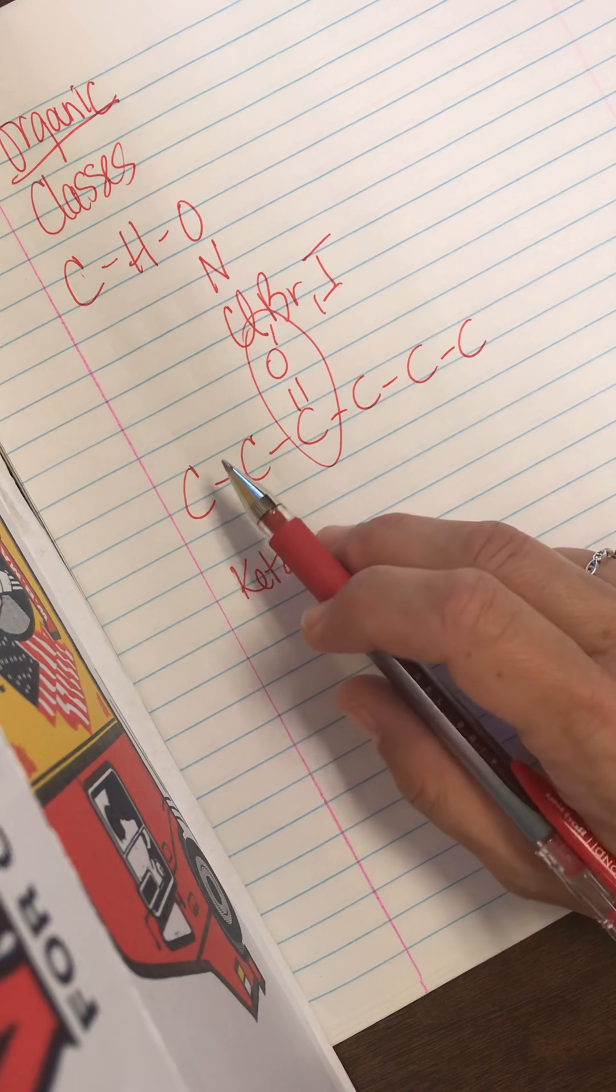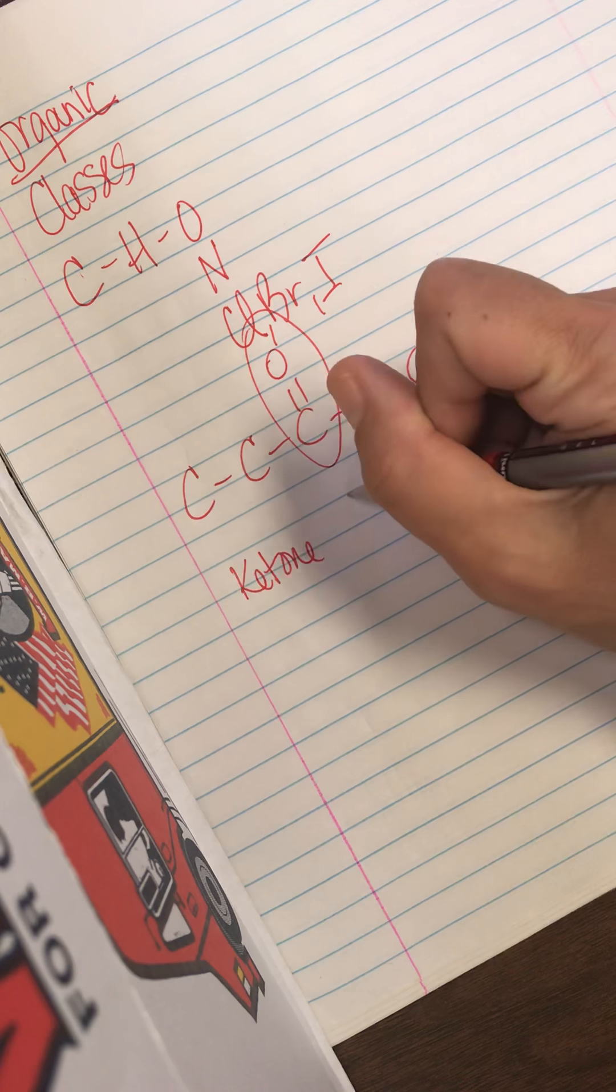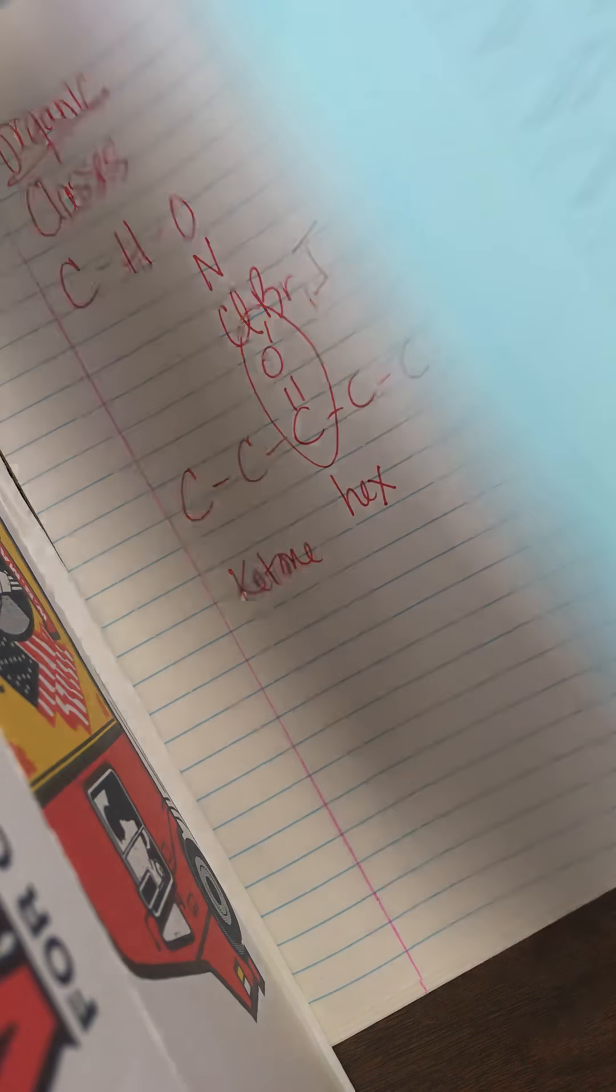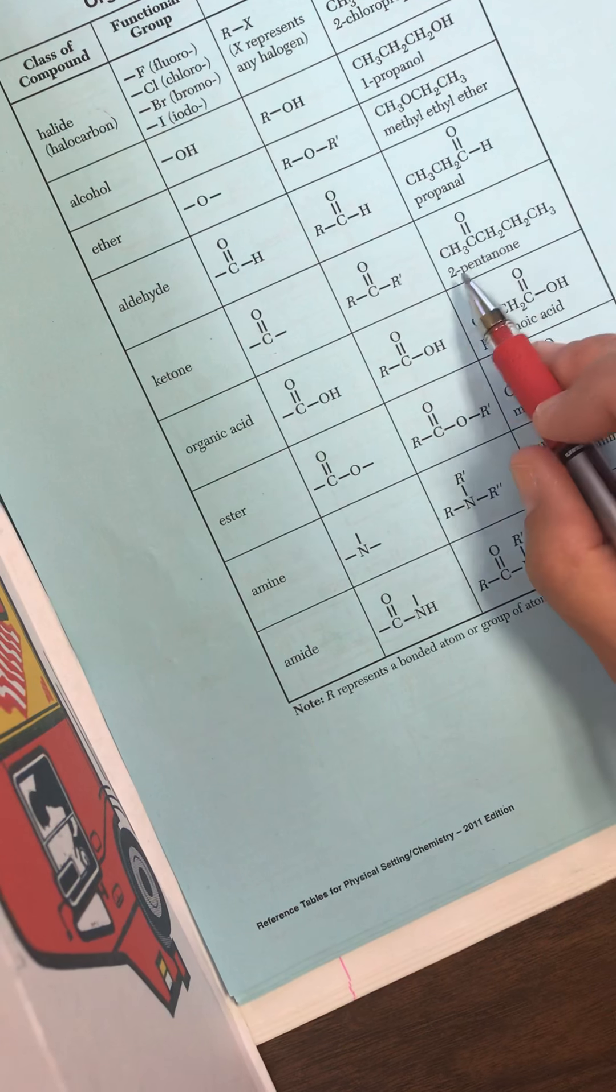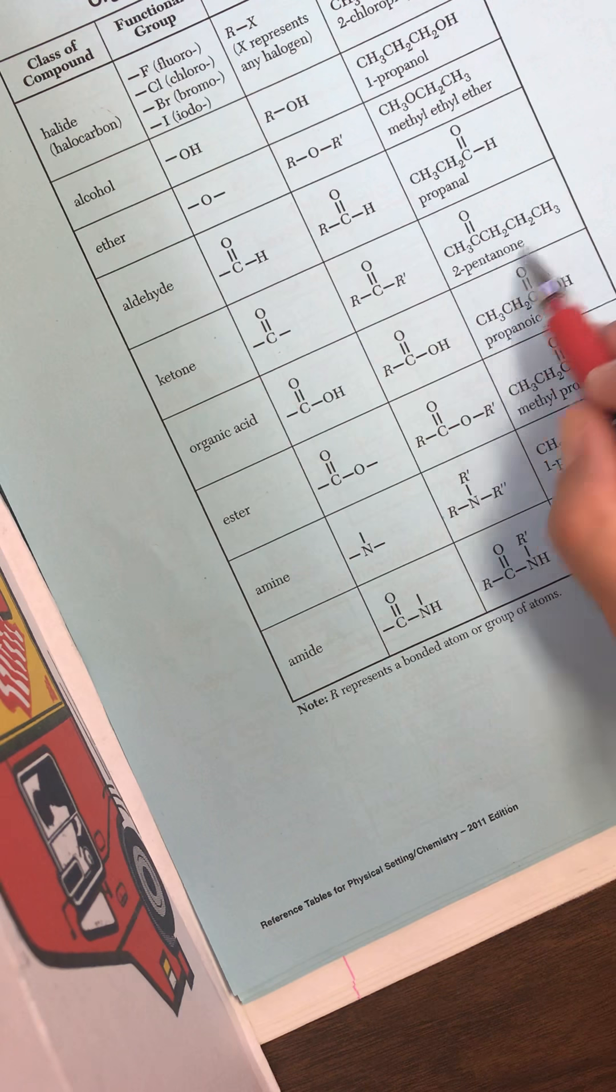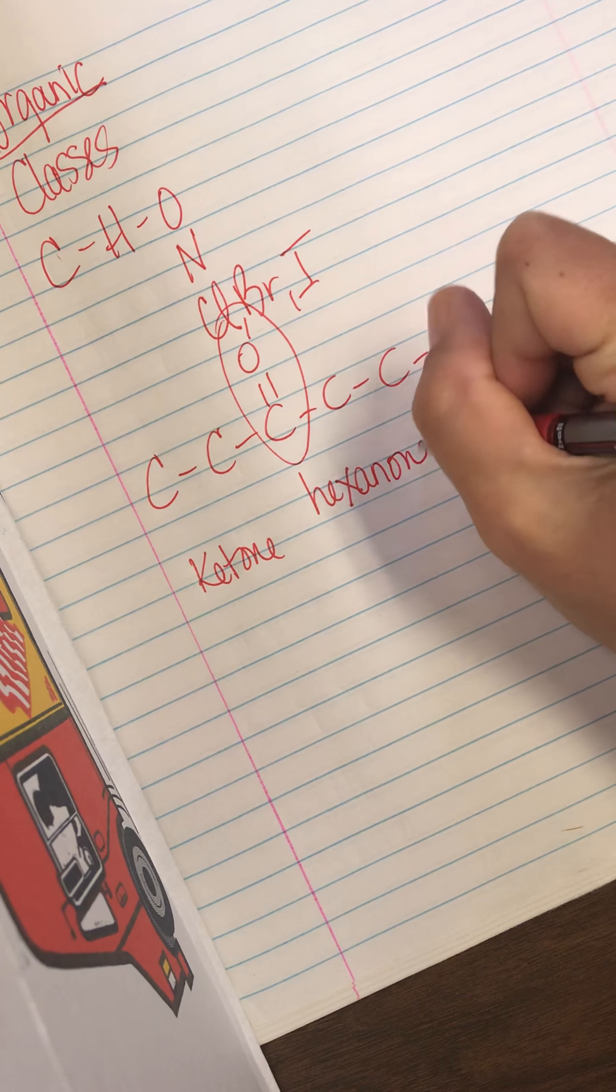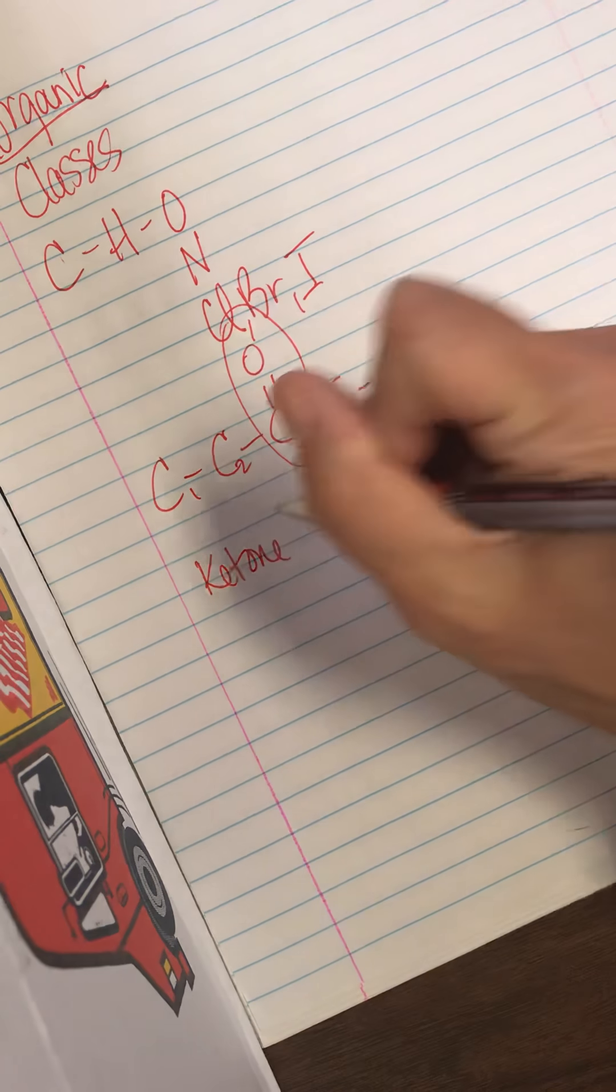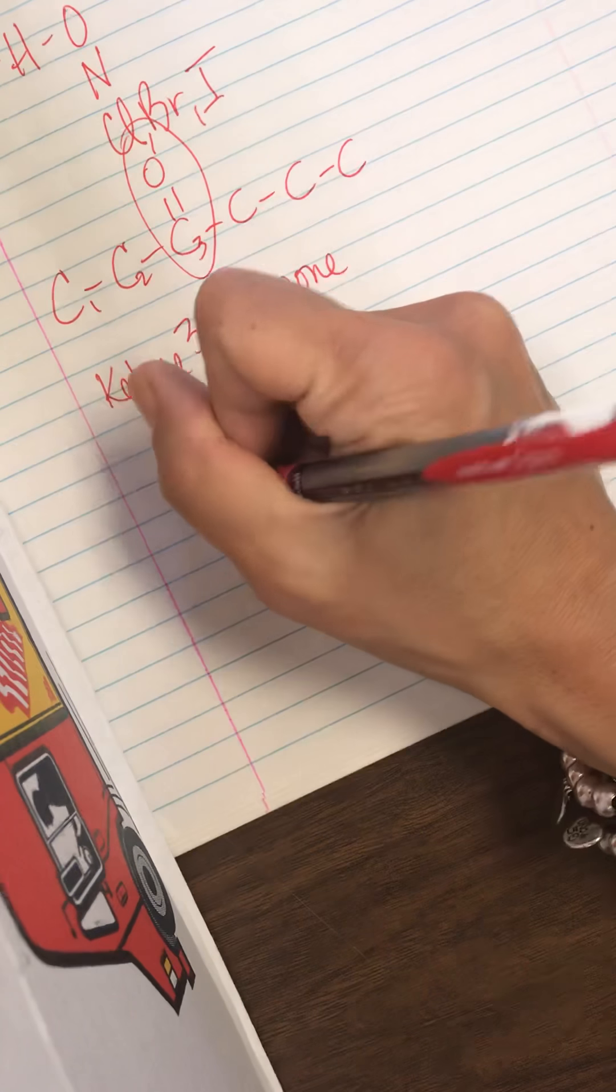And to name it, I'm going to count the carbons. One, two, three, four, five, six. So six is hex. And I look at how they've named it. So they named this one two pentanone. So the two tells me where the double bonded O is and anone is the ending. So hexanone. And then I want to count from the shortest side. So that means I want to count this direction. So three hexanone would be the name.